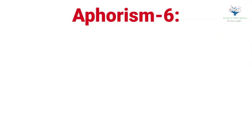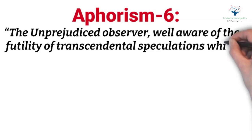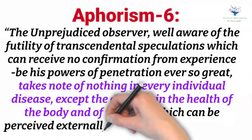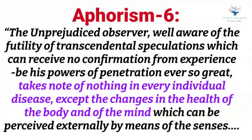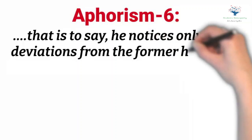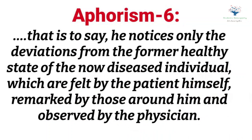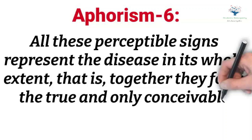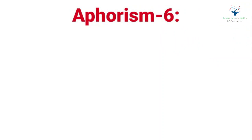Kent starts this lecture by citing Aphorism number 6 of the Organon of Medicine: 'The unprejudiced observer, well aware of the futility of transcendental speculations which can receive no confirmation from experience, takes note of nothing in every individual disease except the changes in the health of the body and of the mind which can be perceived externally by means of the senses — that is to say, he notices only the deviations from the former healthy state of the now diseased individual — which are felt by the patient himself, remarked by those around him, and observed by the physician. All these perceptible signs represent the disease in its whole extent; together they form the true and only conceivable portrait of the disease.'